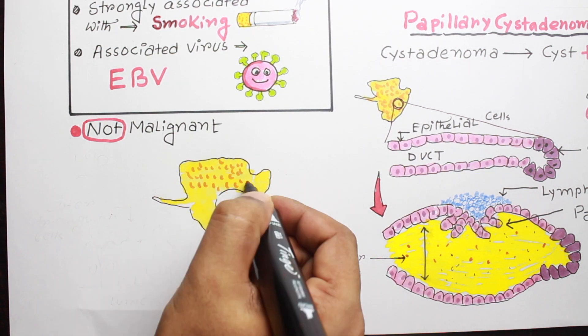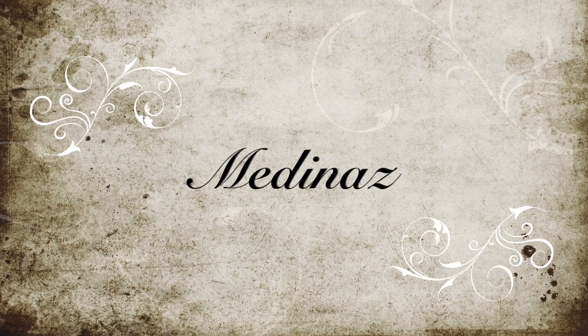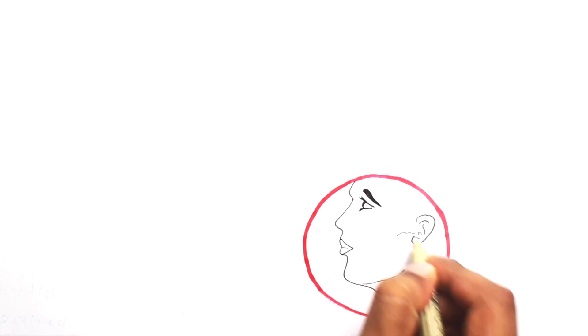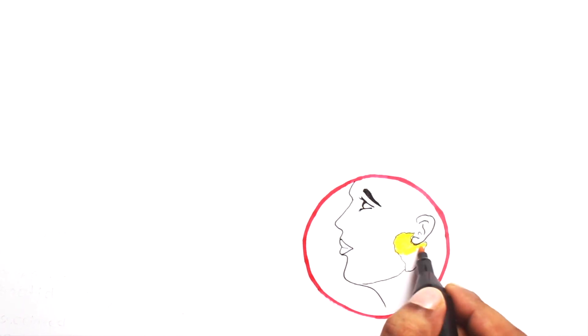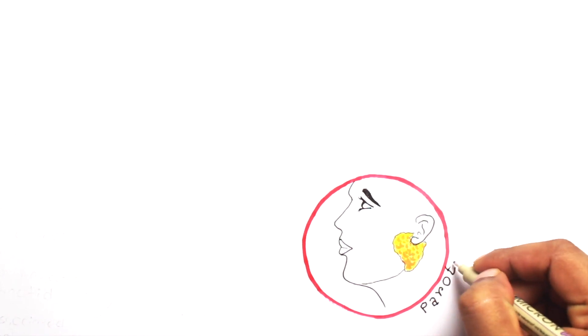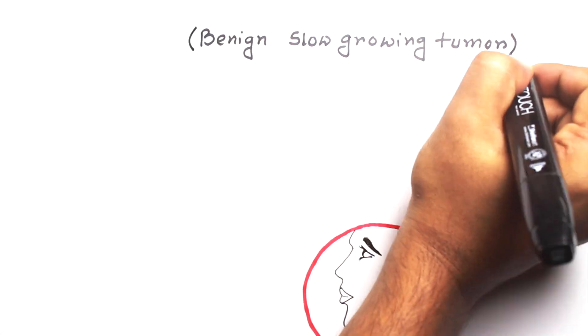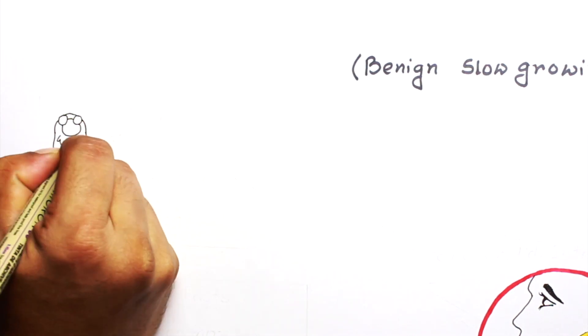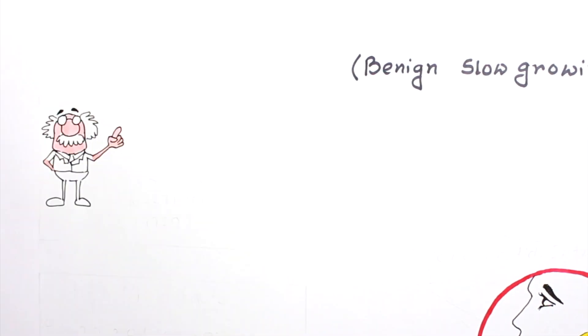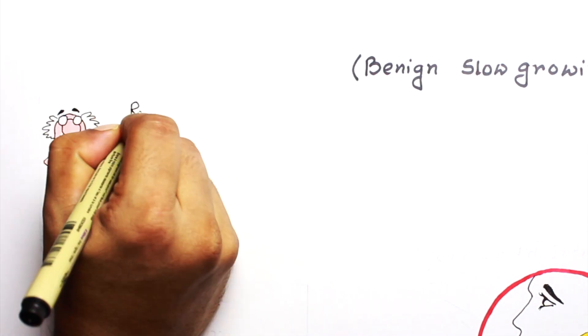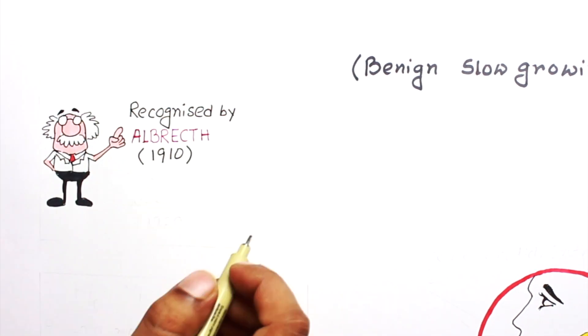Hey guys, welcome to my channel. If you find this video helpful, please like, comment, and share, and don't forget to subscribe. Today we are going to discuss Warthin's tumor, which is also called papillary cyst adenoma lymphomatosum. It is a benign, slow-growing tumor of the parotid gland. It was first recognized by Albrecht in 1910 and later described by Dr. Warthin in 1929, which is where the name came from.